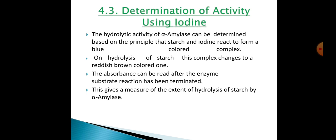The absorbance of the supernatant is read at 610 nanometers. The third method is determination of activity using iodine: the hydrolytic activity of alpha-amylase is determined based on the principle that starch and iodine react to form a blue-colored complex. This blue complex is hydrolyzed and converted to a reddish-brown color. The absorbance is read after the enzyme-substrate reaction is terminated, giving a measure of the extent of starch hydrolysis by alpha-amylase.